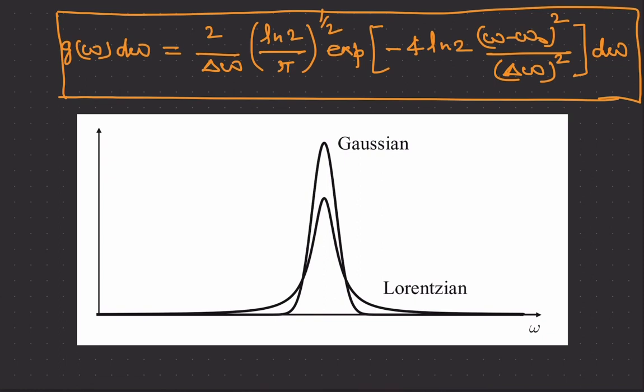This is all about the Doppler broadening. During all the discussion of the line broadening mechanism, we have considered one broadening at a time, but in general all the broadening mechanisms happen simultaneously. The resultant line shape function can be evaluated by performing a convolution of the different line shape functions together.